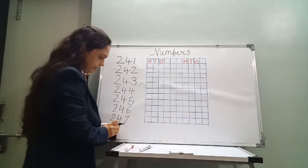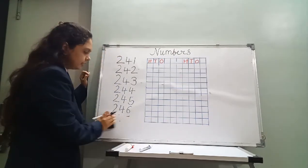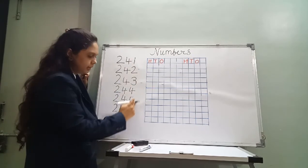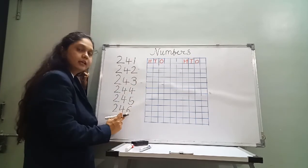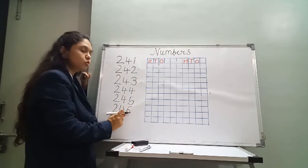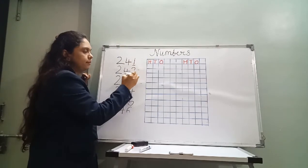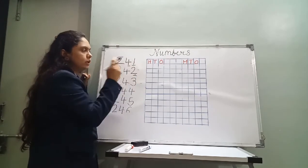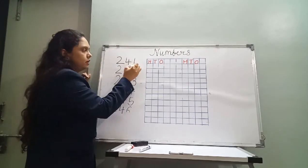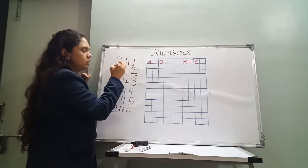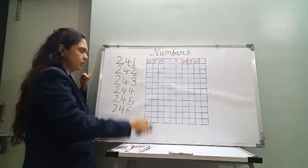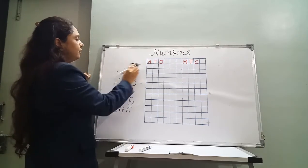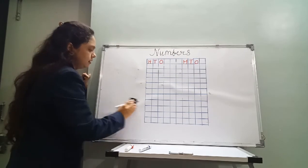तो अभी हम number लिखेंगे — 3 digit के number के. देखो, यह 1 होता है, यह 1 वाला, यह 1 digit होता है. अगर 1 और 2 हो गया तो 2 digit. 1, 2 और 3 हो गया तो 3 digit. तो मैंने आपको 100s, 10s और 1s सिखाया है ना?